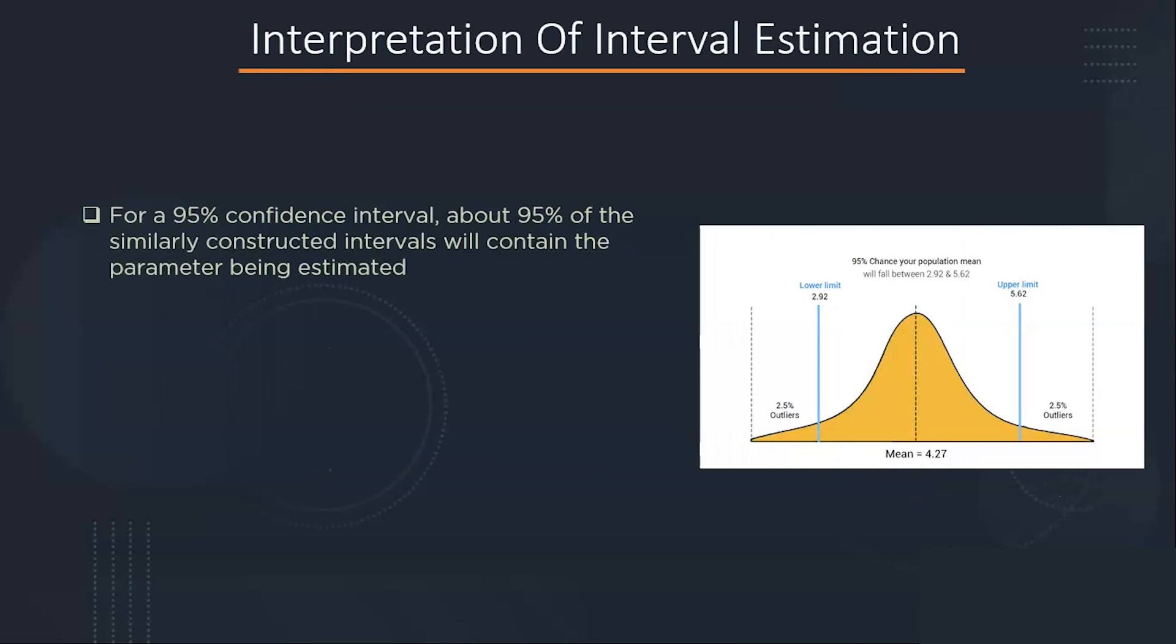A 95% confidence interval of the mean is a range with an upper and lower number calculated from a sample. Because the true population mean is unknown, this range describes the possible values that a mean could be.